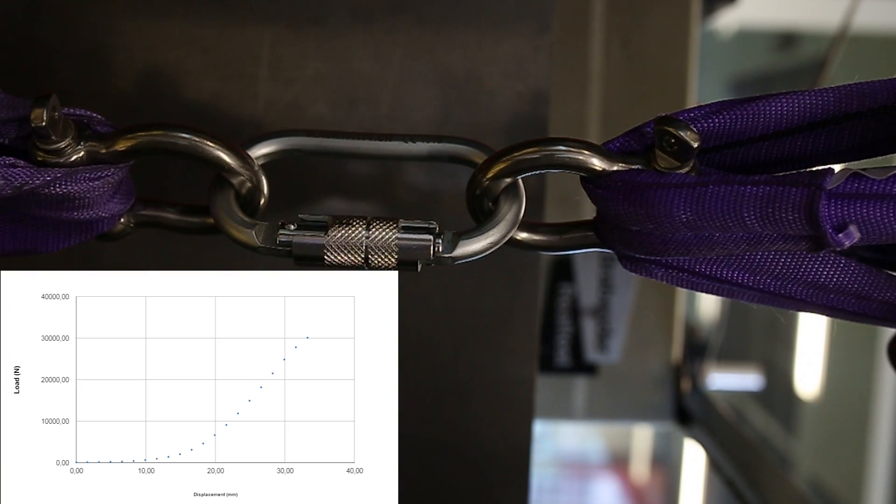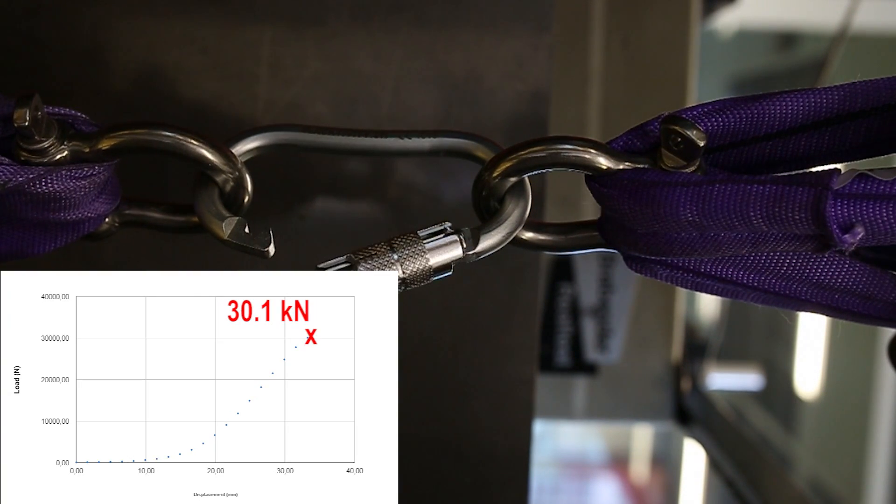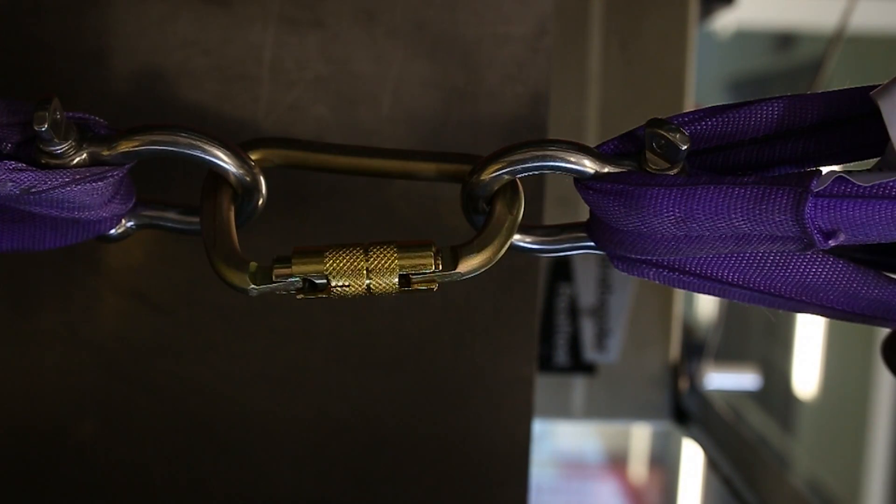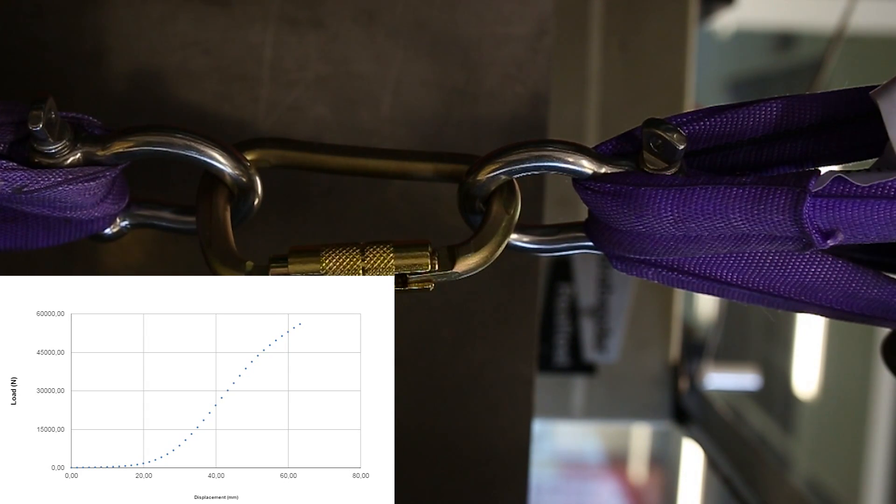In the first test with straight pulling these numbers could be confirmed. Both carabiners held about 5 kN more than indicated.